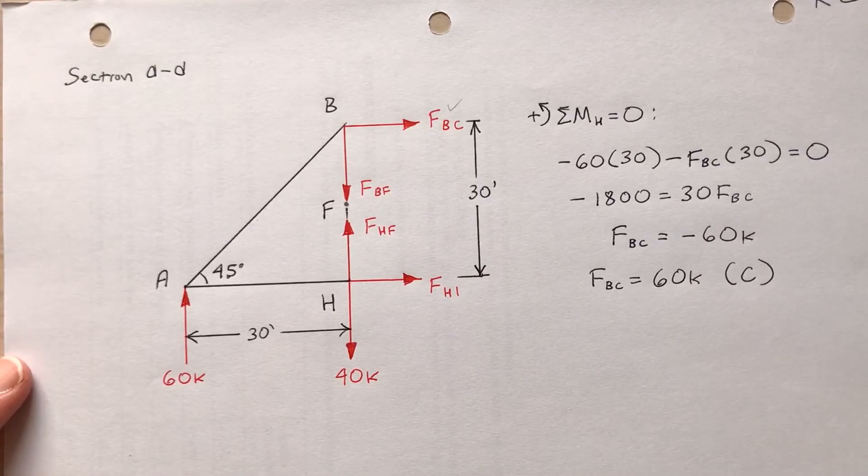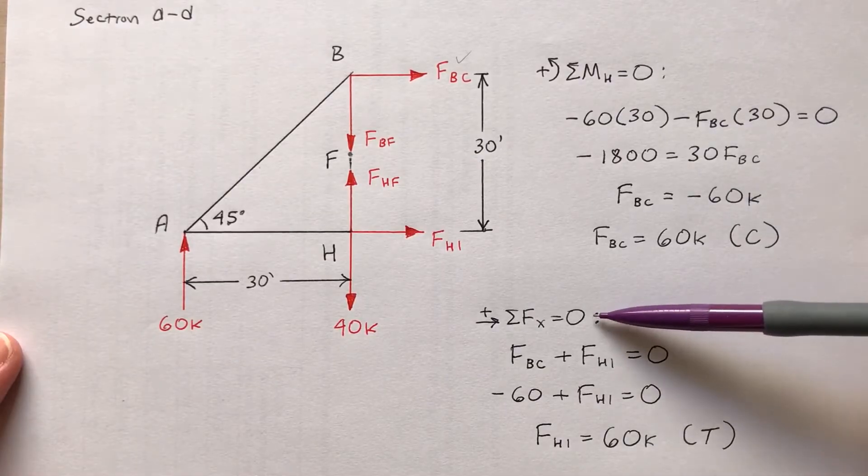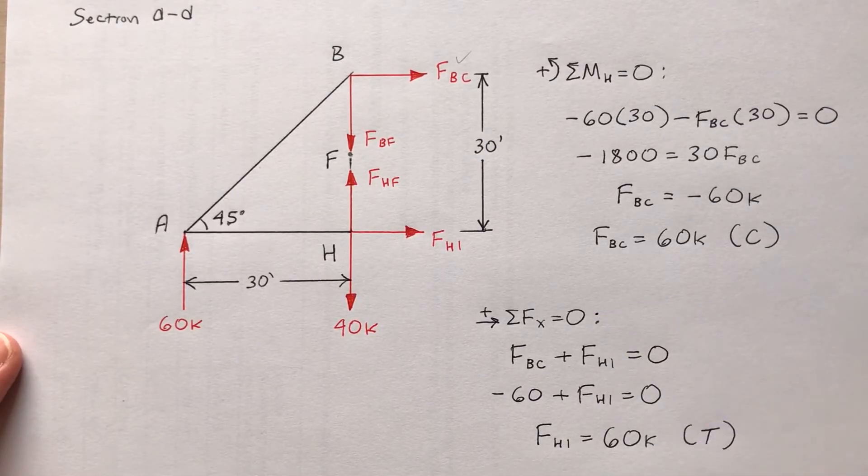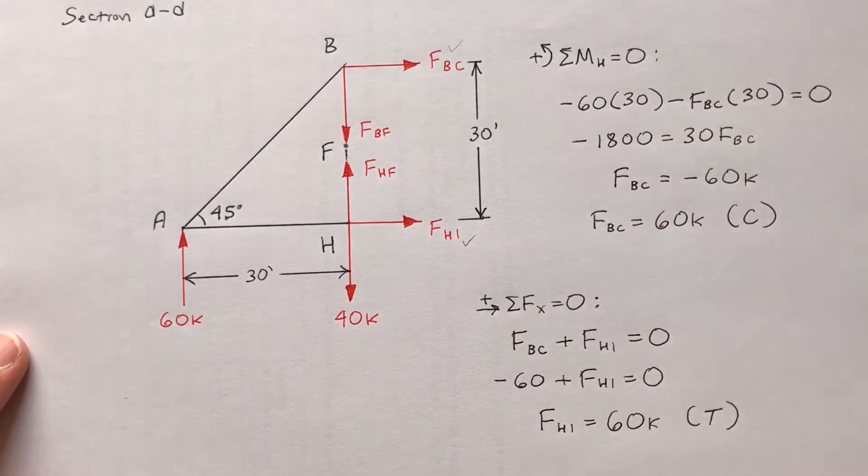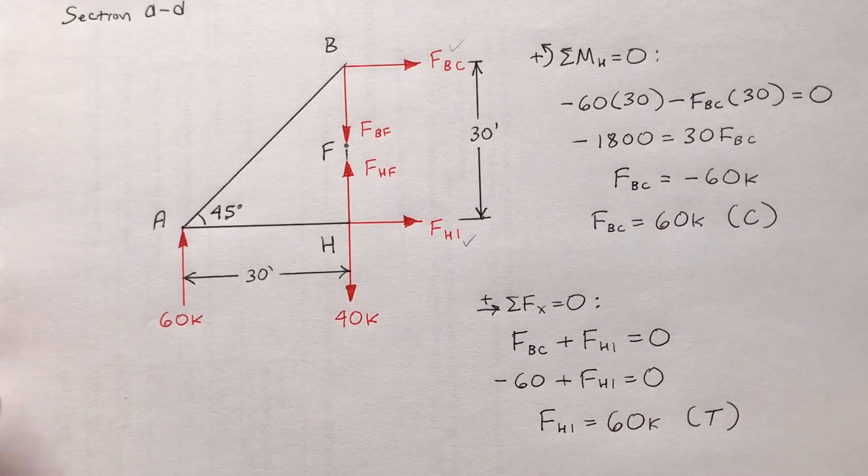So now that I know this, I can just find the sum of the forces in the x direction to find the force in member HI. And finding the sum of the forces in the x direction, setting it equal to zero, I find that F sub HI is 60. 60 kips tension. So now I have this one.